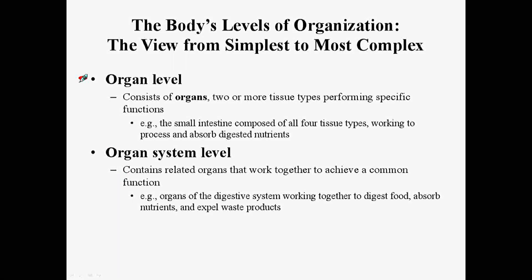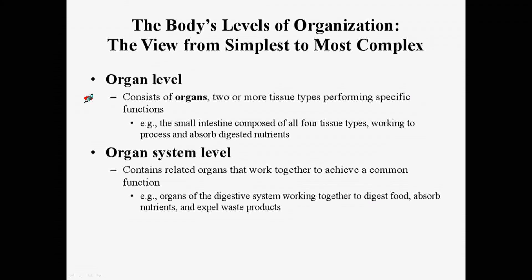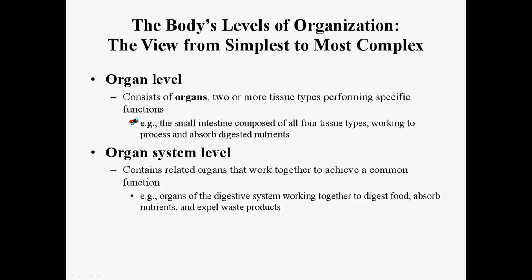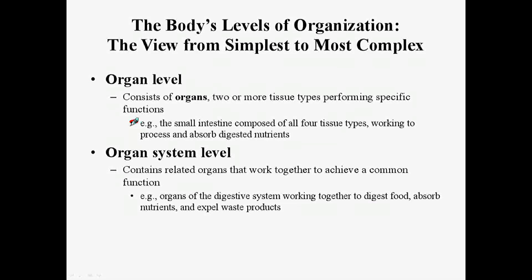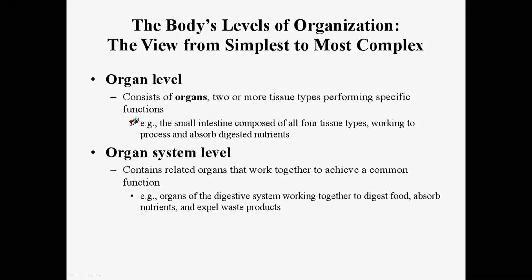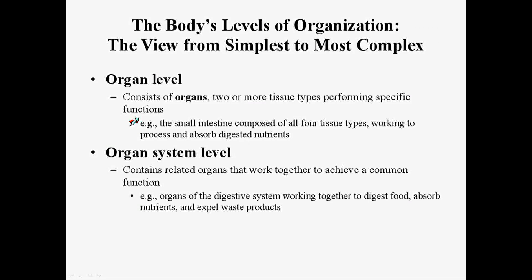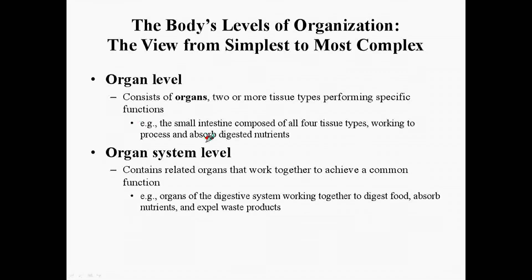The organ level consists of organs, where two or more tissue types perform some specific function. For example, the small intestine is composed of all four tissue types — epithelial, connective, muscular, and nervous — and they all work together to process and absorb digested nutrients.